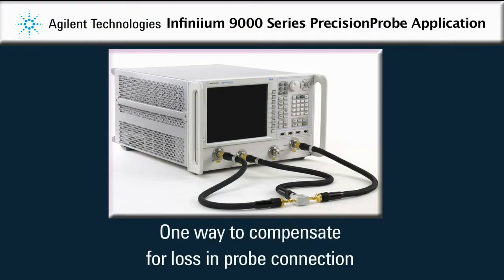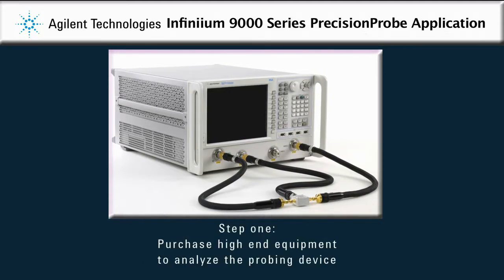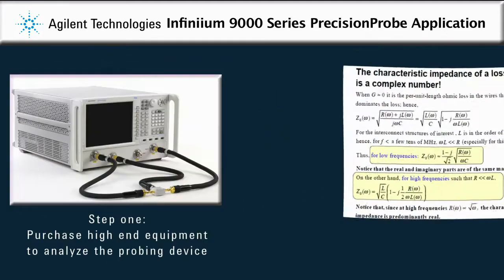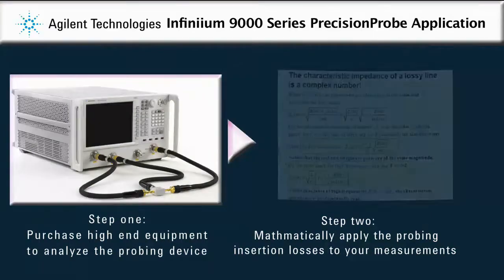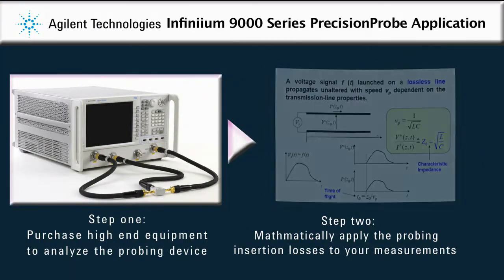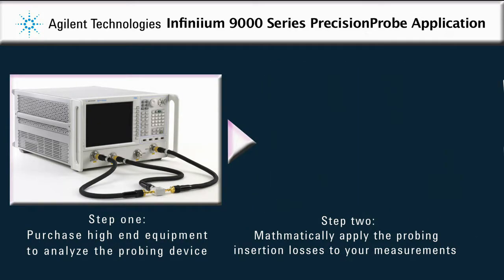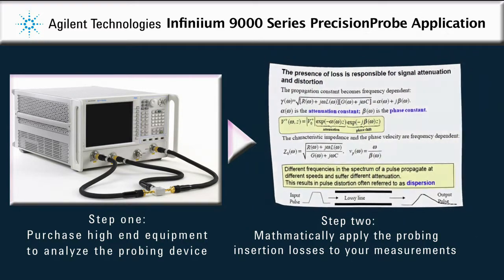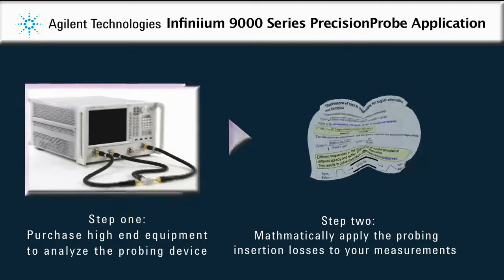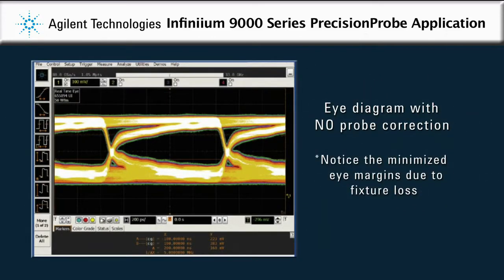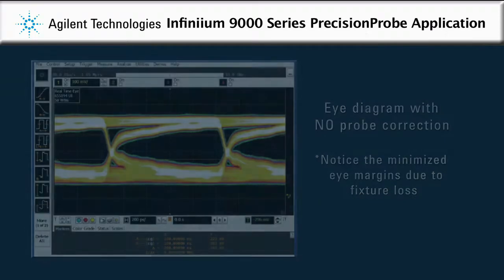This compensation has traditionally been done using high-priced vector network analyzers to measure probe responses and then uses mathematically modeled results. This can be time-consuming, expensive, and requires a high level of specific skill. Many engineers choose to forgo this difficult and costly process and therefore live with measurement inaccuracy associated with their probing devices.